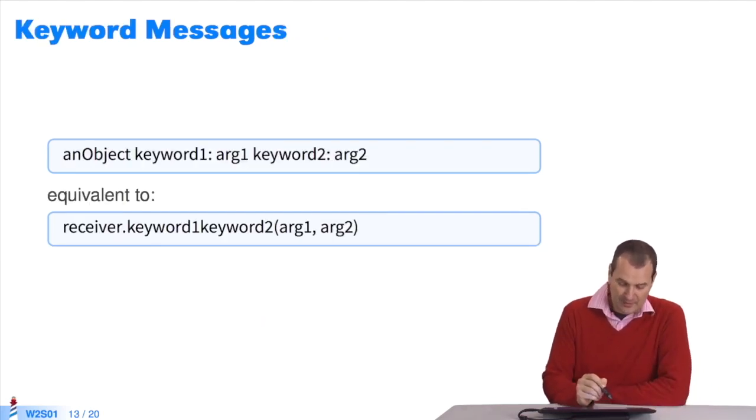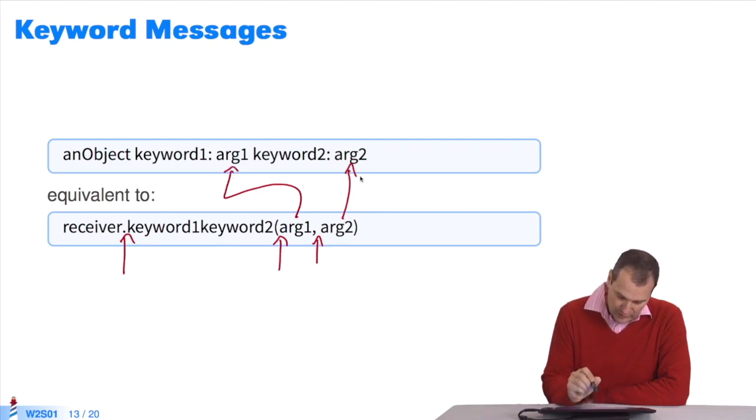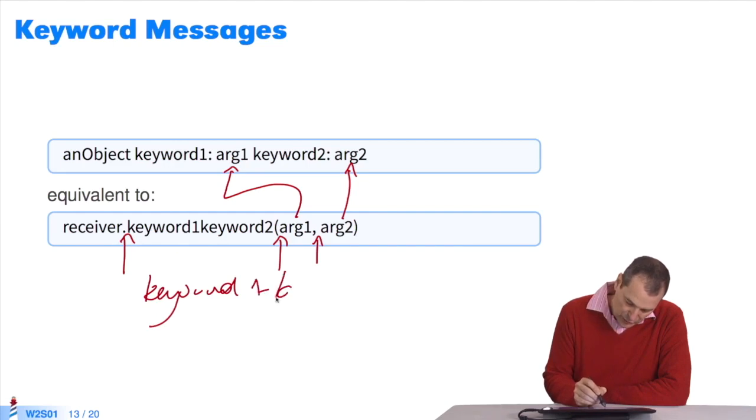About keyword messages. People often find them frustrating when they're used to a Java-like or C-like syntax with a period, parentheses, and a comma in the middle. But we do it like this in the middle. What you have to see in this example is that the message is keyword one, keyword two. The message is full, composed of two parts.